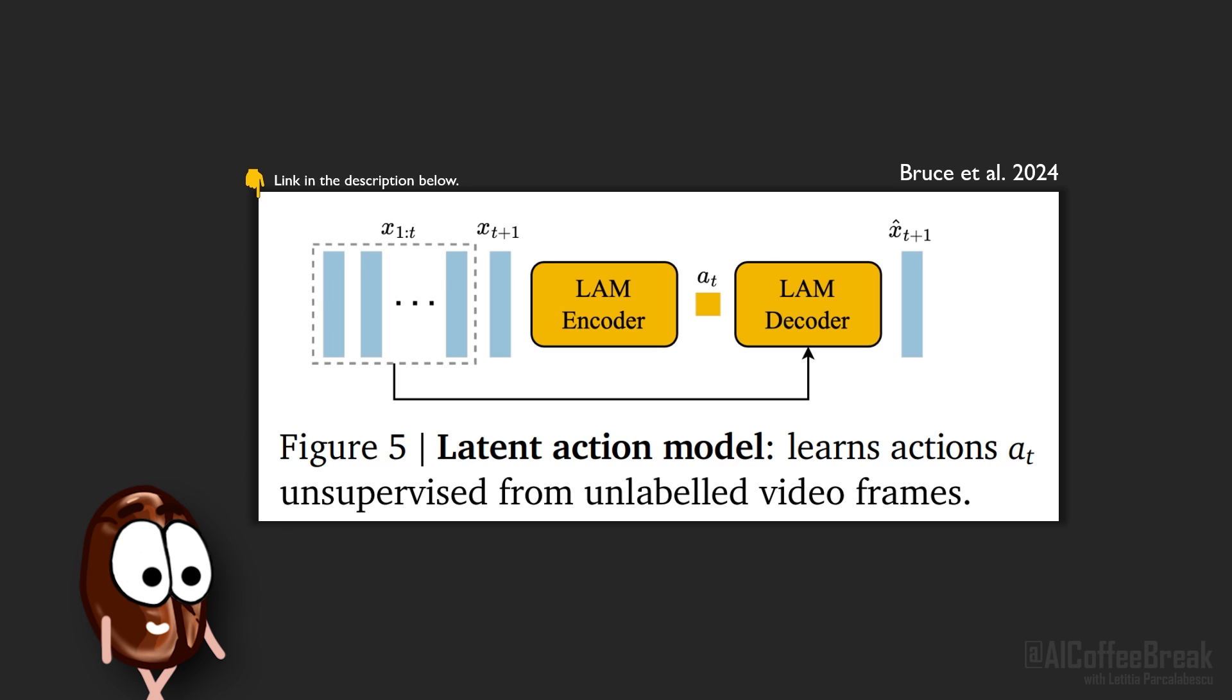But the model will discover meaningful actions because the decoder only has access to that action and the history to reconstruct the next frame, so it should encode meaningful changes in that action A between frames. So the eight possible values of A are learned during training, and because the authors let the model choose from eight possible actions, it's unsurprising that it maps to eight actions like left, right, up, and down, jumping, and who knows what else.